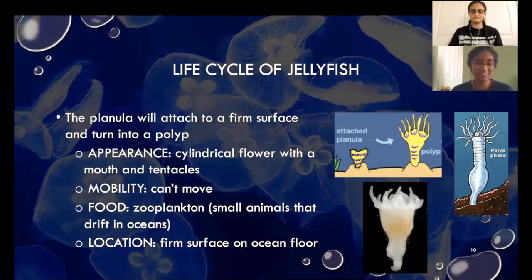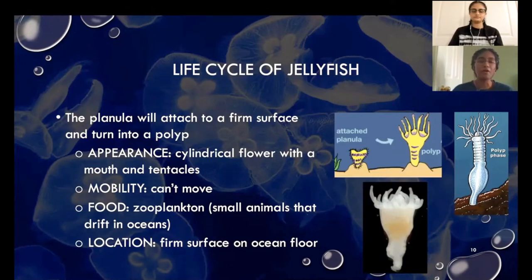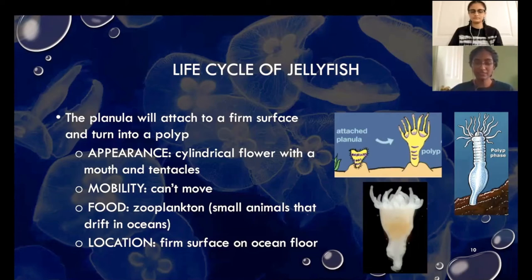After a few days, the planula will attach to a firm surface on the ocean floor where it can't move, and it will turn into a polyp. A polyp looks like a cylindrical flower that has a mouth and tentacles. Because it's attached to a surface it can't move. They feed on zooplankton, which are small animals that drift in oceans, seas, and freshwater bodies.